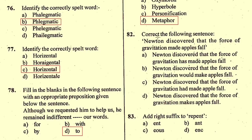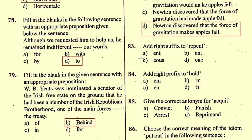Question number 82 (correction): Correct the sentence — 'Newton discovered that the force of gravitation made a pulse fall.' The correct sentence keeps it in simple present tense because universal truths are always expressed in the present tense. Option D is correct. Question number 83: Add the right suffix to 'repent' — it becomes 'repentant', option B. Question number 84: Add the right suffix to 'bold' — the prefix 'em-' gives 'embolden', option A.